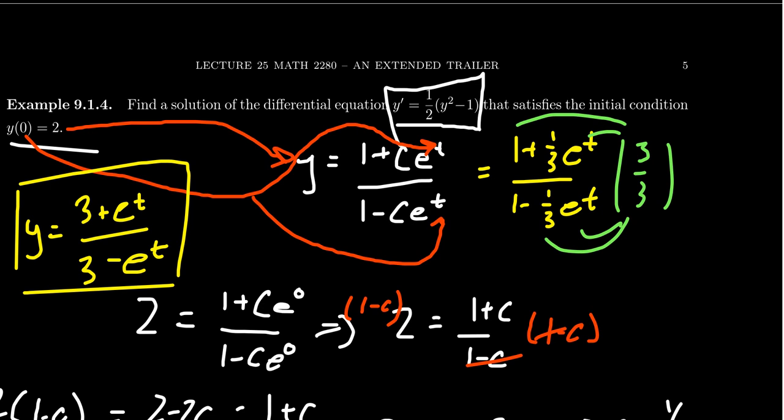It's a solution to the differential equation. We saw that previously. And it also will satisfy the initial condition. If you plug in x equals 0 right here, you're going to get 3 + 1, which is 4, over 3 - 1, which is 2. 4 over 2 is 2. And so this solves our initial value problem.